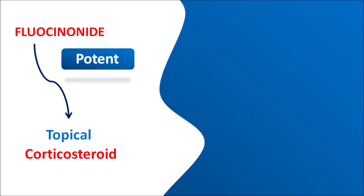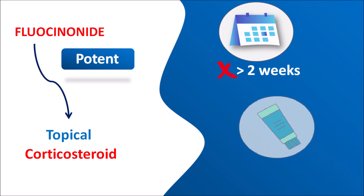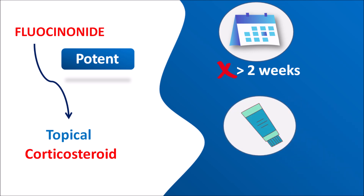With the use of fluocinonide, a few important points should be considered. First, this drug should be used for less than 2 weeks since it is a potent glucocorticoid — use for greater than 2 weeks is not recommended. Similarly, this drug should be used at a low dose, and the total amount applied on the skin should be less than 60 grams per week.